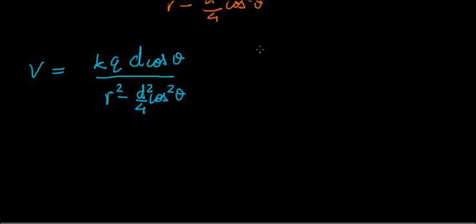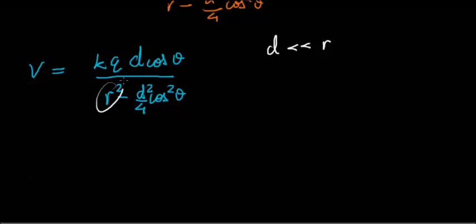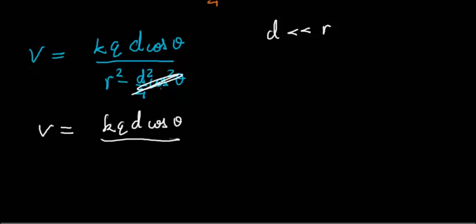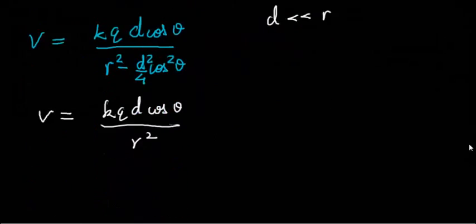Now we apply the approximation: d is much much less than r. Since r is very large and we're squaring it, and d is very small and we're squaring it too, the difference between these two numbers is enormous — r squared is much much bigger than d squared over 4 times cos squared theta. So we can completely ignore that term, and V becomes kq times d cos theta over r squared.